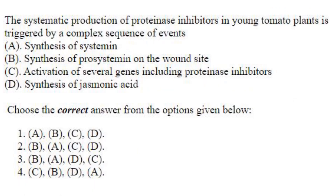The systematic production of proteinase inhibitors in young tomato plants is triggered by a complex sequence: synthesis of prosystemin at the wound site (B); then synthesis of systemin (A); then synthesis of jasmonic acid (D); and finally activation of several genes including proteinase inhibitors (C). The answer is option 3: B, A, D, C.